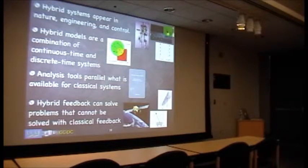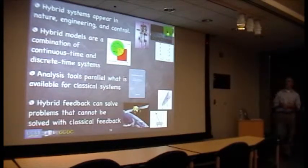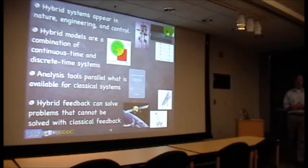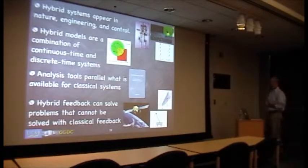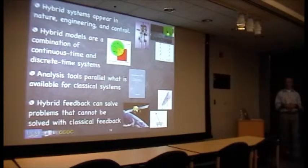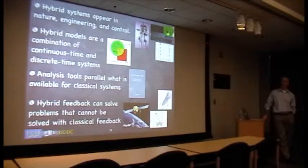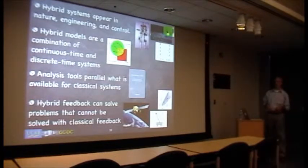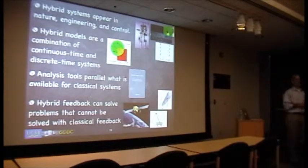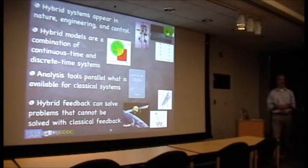Just to wrap things up: hopefully I've captured your attention regarding the intrigue of hybrid systems. They appear in nature, in engineering, they come up due to control algorithms—they're a combination of continuous-time and discrete-time systems, both continuous variables and discrete-value variables. We've been able to push to the hybrid world many of the analysis tools that we rely on for differential equations when we devise classical nonlinear control algorithms. Hybrid feedback can solve problems that cannot be solved with classical feedback—most significantly, problems where topological constraints would automatically rule out robust feedback that achieves certain objectives globally.